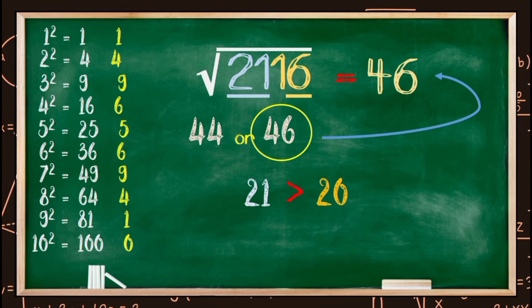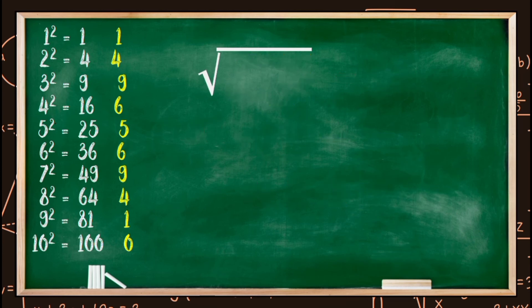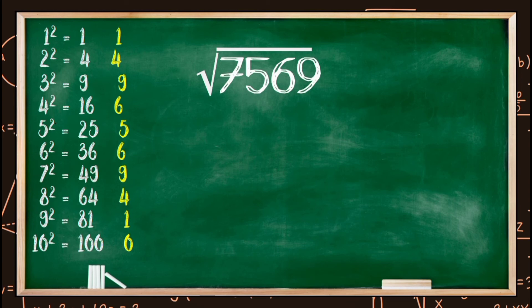Now, in order to understand the trick better, let us take another example. For the next example, we are about to find the square root of 7569. Step one: we also need to group the last pair of digits and the rest of the digits together. The first group will be 69 and the second group will be 75. Step two: consider the unit digit of the first group. Since the unit digit of 69 is 9, we can say that the unit digit of its square root will be either 3 or 7.